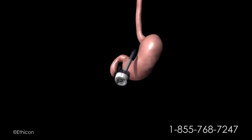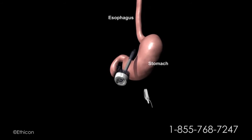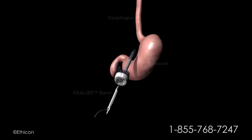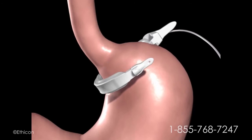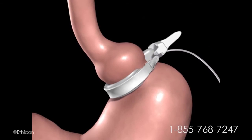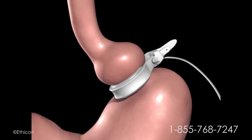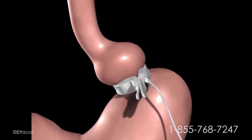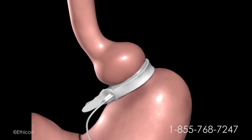In preparation for the band, a tunnel is created behind the stomach. The band is introduced to the abdomen through a trocar. The band is positioned around the upper portion of the stomach and then secured using the locking mechanism.